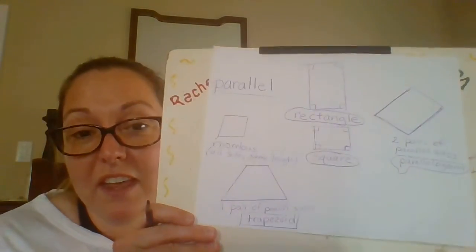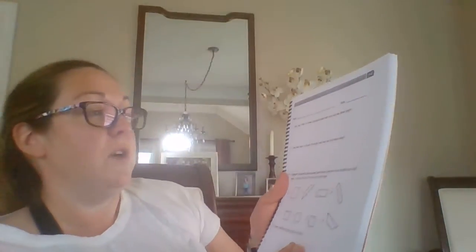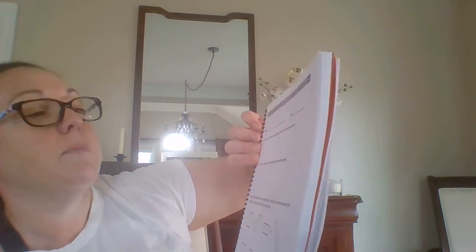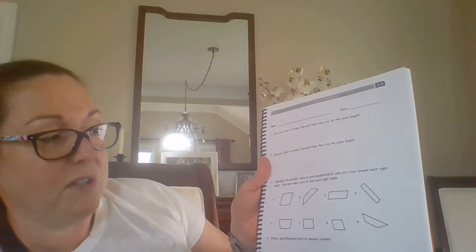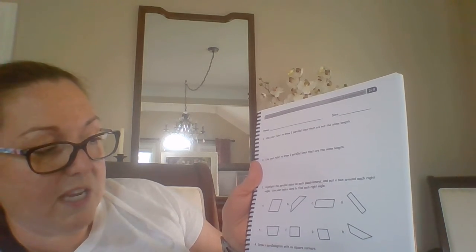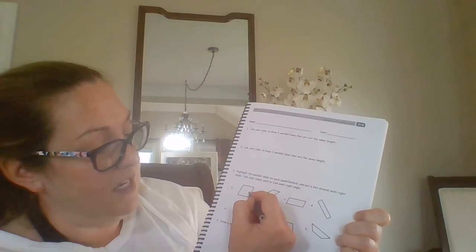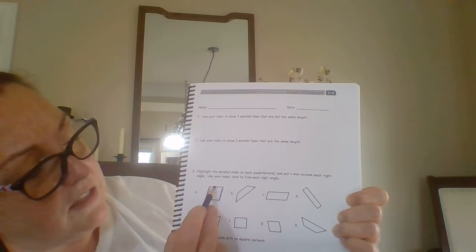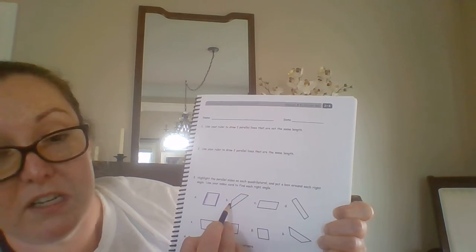That's a lot of names of shapes and attributes for today! Here's what I want you to do in your book: use your ruler to draw parallel lines and not-parallel lines — parallel lines that are the same length and parallel lines that are not the same length. It's also going to have you highlight the parallel sides on your quadrilaterals using different colors for different pairs.